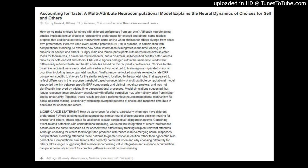Here we used event-related potentials (ERPs) in humans, in combination with computational modeling, to examine how social information is integrated in the time leading up to choices for oneself and others. Hungry male and female participants with unrestricted diets selected foods for themselves, a similar unrestricted eater, and a dissimilar self-identified healthy eater.